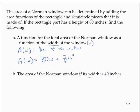So if W is equal to 40, then A of 40 would be 80 times 40 plus pi over 8 times 40 squared.